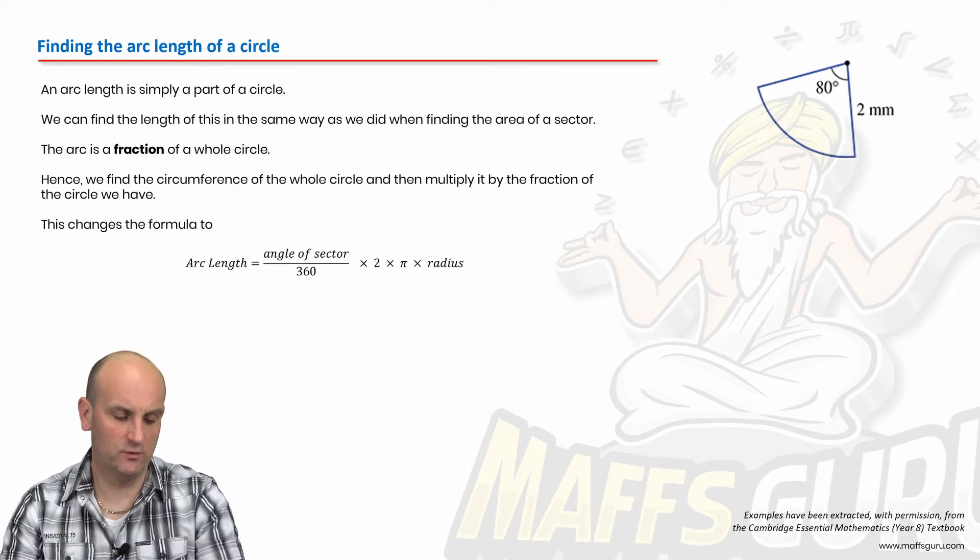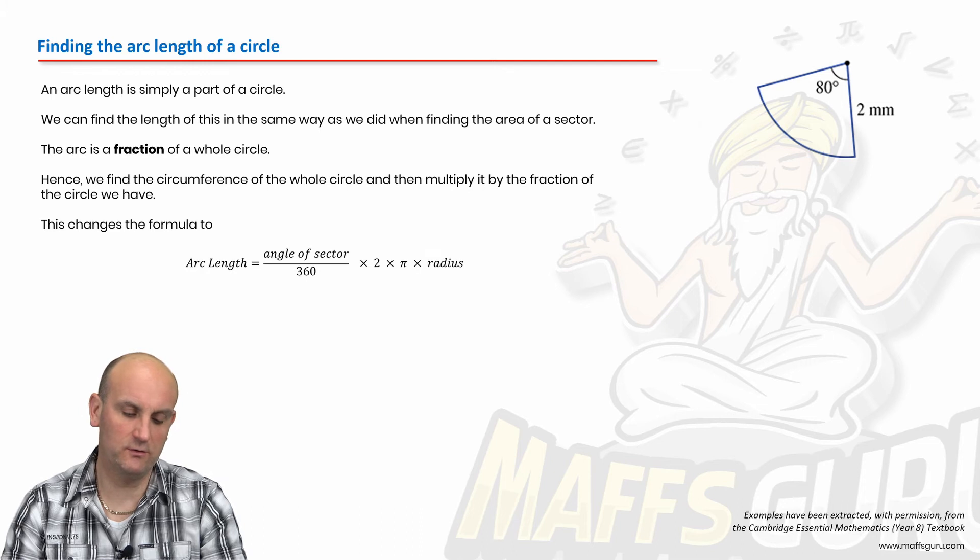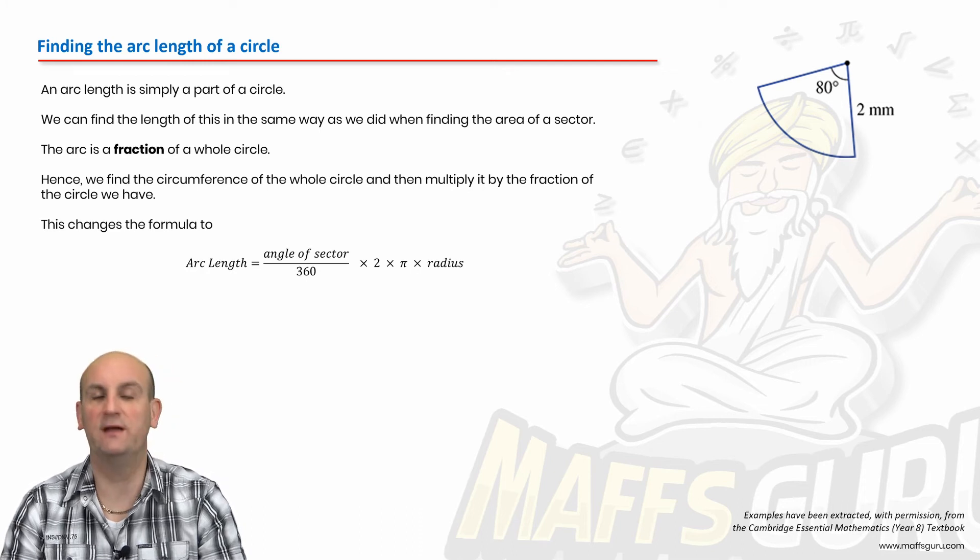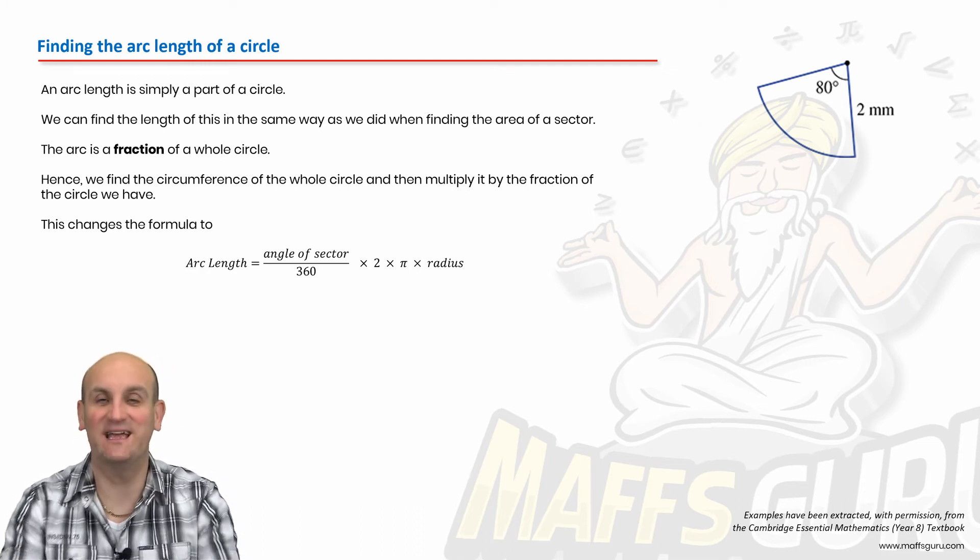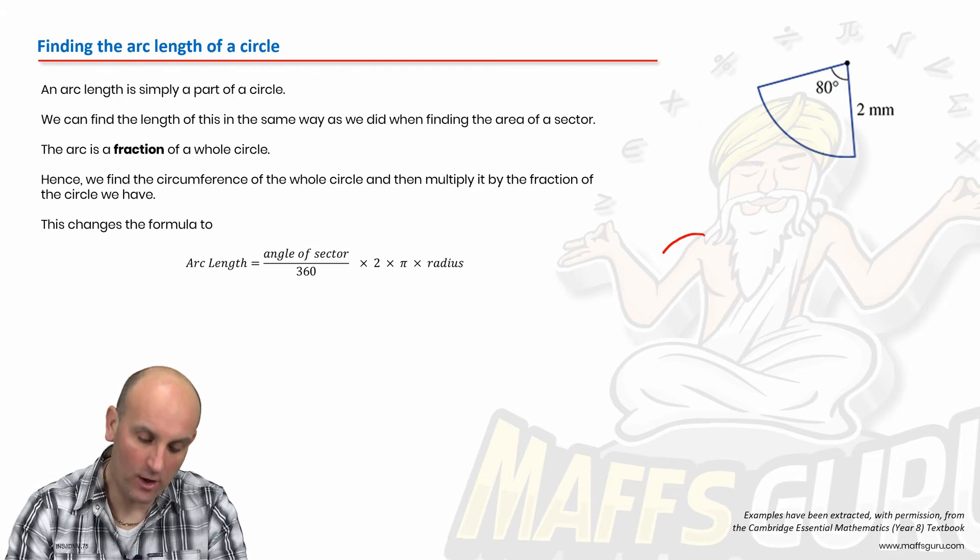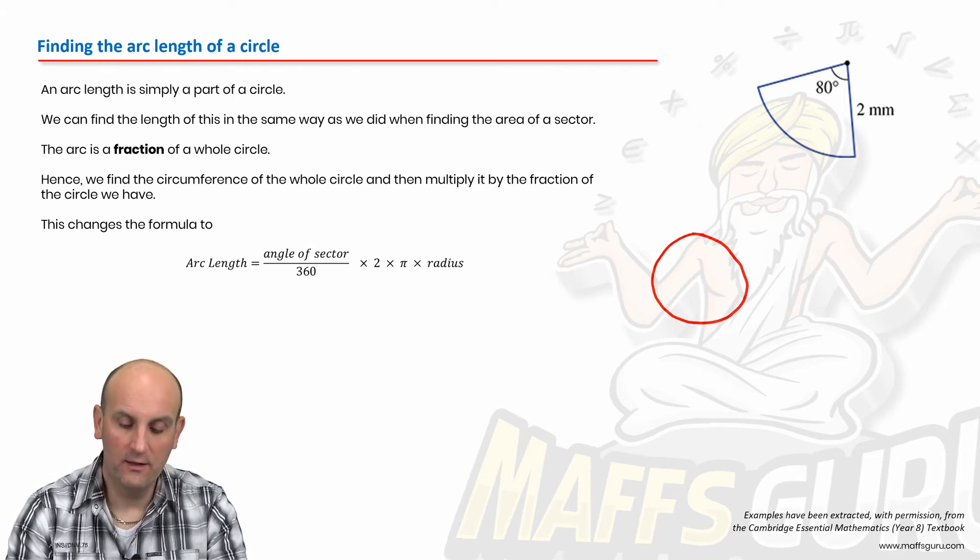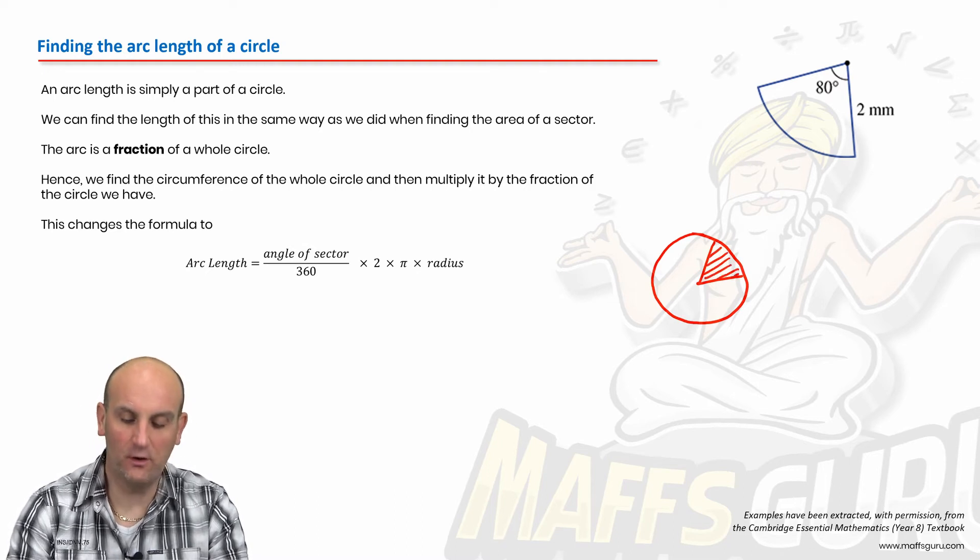Find the arc length of a circle. Find the circumference of the whole circle and multiply it by the fraction of the circle we have. Now, this is it. We have a sector here.